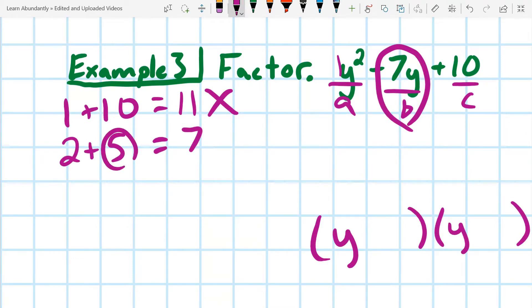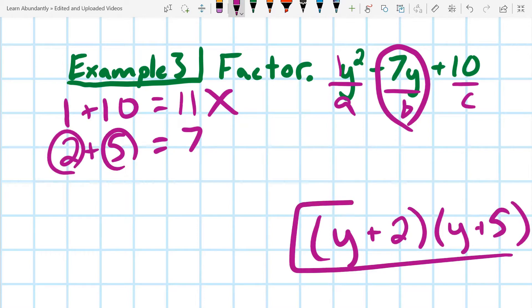So our two numbers are 5 and 2. They're both positive. So we can go ahead and put them right there. And that's that.